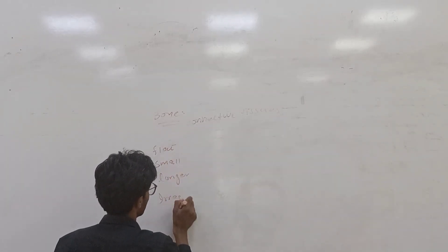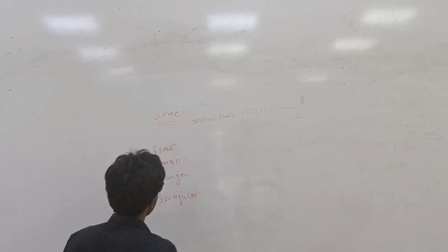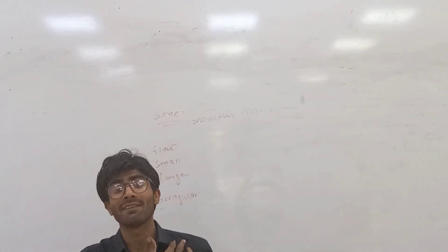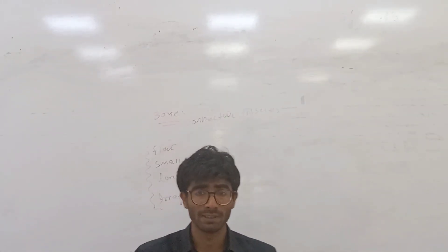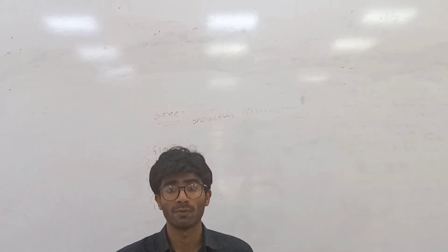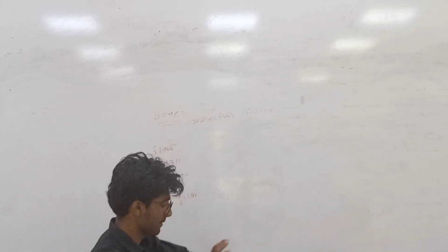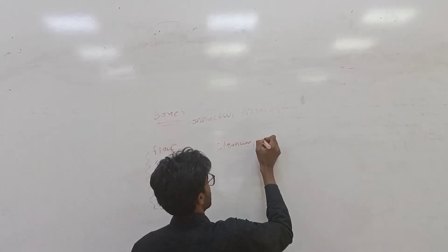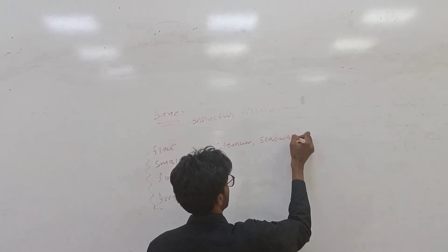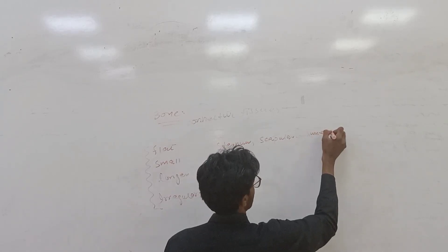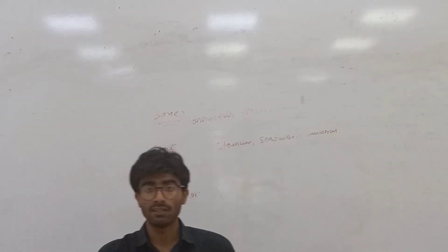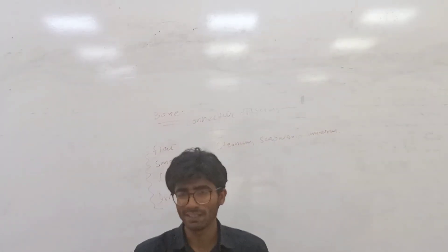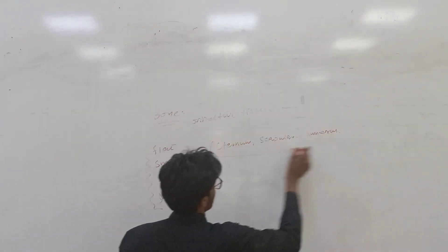These are the categories of bones present in the human body. For example, femur is longer, clavicle and scaphoid bone are small, and sternum and scapula are flat. Bones are present in all parts of the body: in our skull, upper limb, and lower limb.